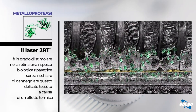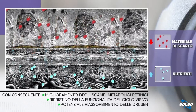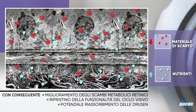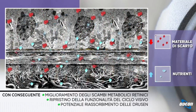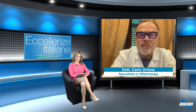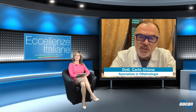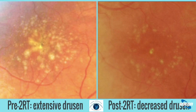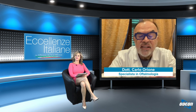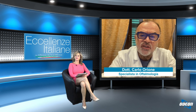Questo laser va a stimolare una riduzione della membrana di Bruch: si assottiglia e riparte il meccanismo di nutrizione da parte della coriocapillare e dei vasi retinici, con eliminazione delle sostanze di scarto. Ciò avviene grazie alla stimolazione della formazione di un enzima chiamato metalloproteinasi, che riassottiglia la membrana e ripristina il processo. Come si vede nelle immagini, in una maculopatia con druse, prima e dopo il laser 2RT le druse sono diminuite. Oltre a bloccare l'avanzare della patologia, il laser può anche far recuperare qualche piccola capacità visiva, rallentando e bloccando la degenerazione che porta a cecità.